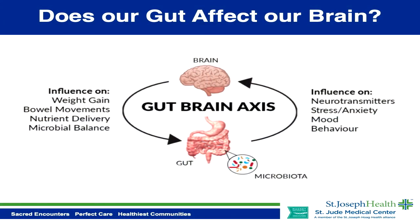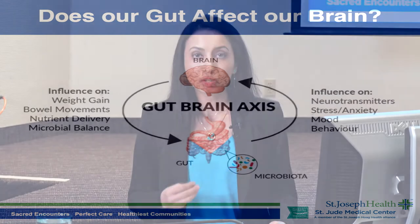Does our gut affect our brain? Scientists are now recognizing something called the gut-brain axis. A significant portion of your neurotransmitters like serotonin and dopamine are actually made in your gut — that's why they sometimes refer to your gut as the second brain. When your gut is having problems like bloating, constipation, or abdominal pain, your mood will often suffer as well. Many patients with IBS are thought to have a deficiency of serotonin in the gut, which is why conventional medicine treats many IBS patients with antidepressant medications — these medications raise serotonin not just in the brain, but also in the gut.